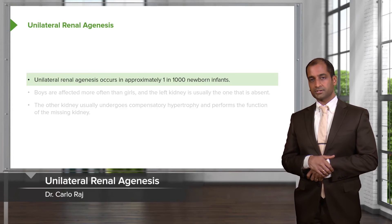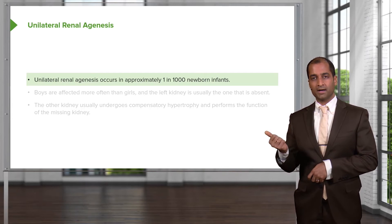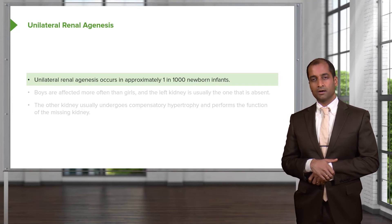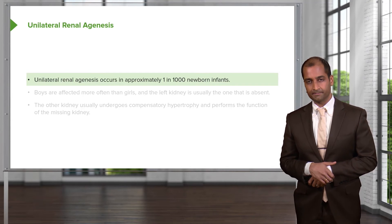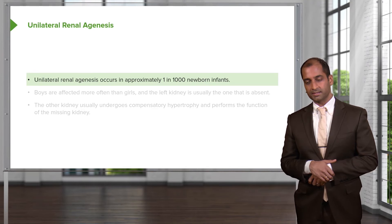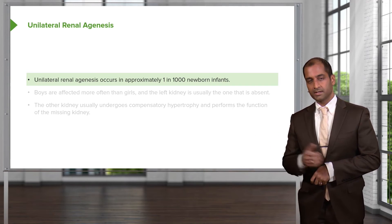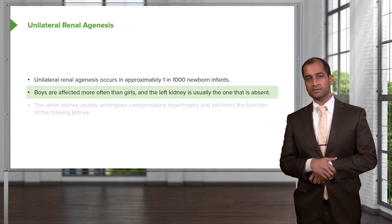Say that a child is born with only one kidney — one in 1,000. One in 1,000 newborn infants only have one functioning kidney. Is this child going to die? Thank goodness, no. When you have one kidney, understand that the kidney function will be quite normal. Boys are affected more so than girls, and the left kidney is usually the one that's absent.